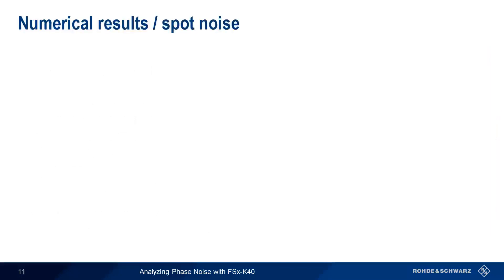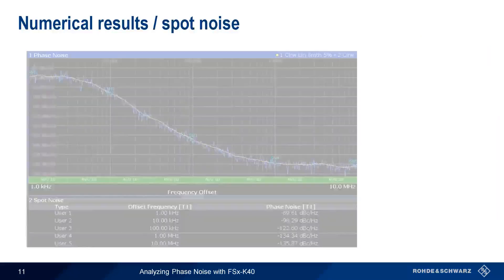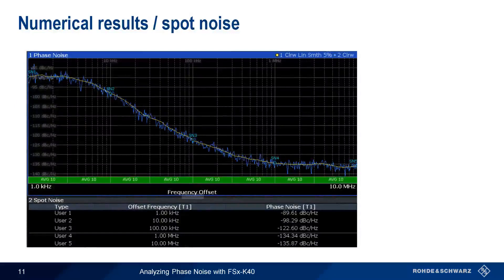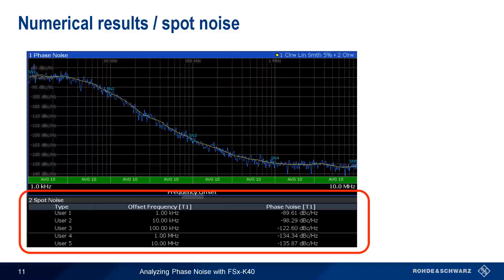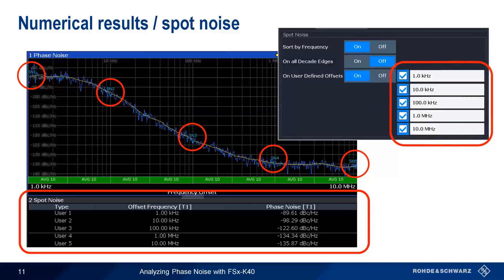If we're interested in the phase noise at a specific frequency offset, this is called spot noise, and is often used when verifying that phase noise is below a certain specified level at a given offset. Spot noise is often displayed as a table of offsets and phase noise values, with markers automatically placed at corresponding trace points. By default, spot noise values are measured at decade edges — that is, at different powers of 10, for example 1 kHz, 10 kHz, 100 kHz, etc. — although these can be easily changed by the user.